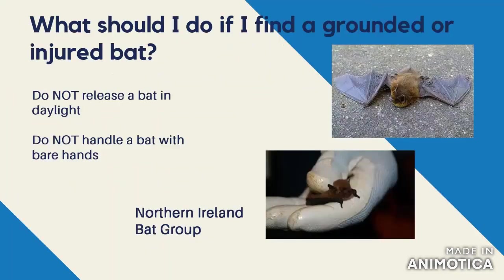What should you do if you find a grounded or injured bat? Bats are very common in Northern Ireland — we have about eight or nine species — and it's not uncommon to find a grounded bat out in the daytime on the ground, perhaps exhausted or injured. The two main things to remember: you should never release a bat in daylight, and you should never handle a bat with bare hands. Always put gloves on.